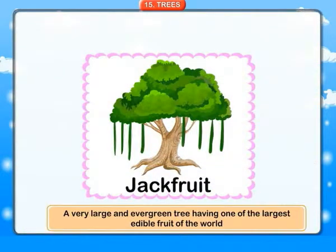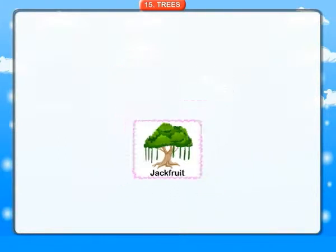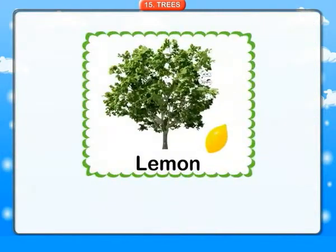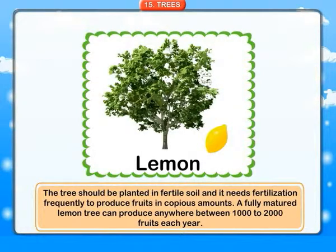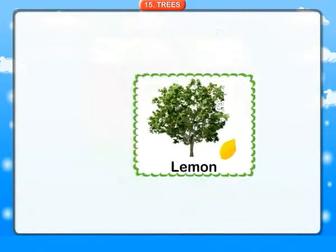Jackfruit: a very large and evergreen tree, having one of the largest edible fruits in the world. Lemon: the tree should be planted in fertile soil and needs fertilization frequently to produce fruits in copious amounts. A fully matured lemon tree can produce anywhere between 1000 to 2000 fruits each year.